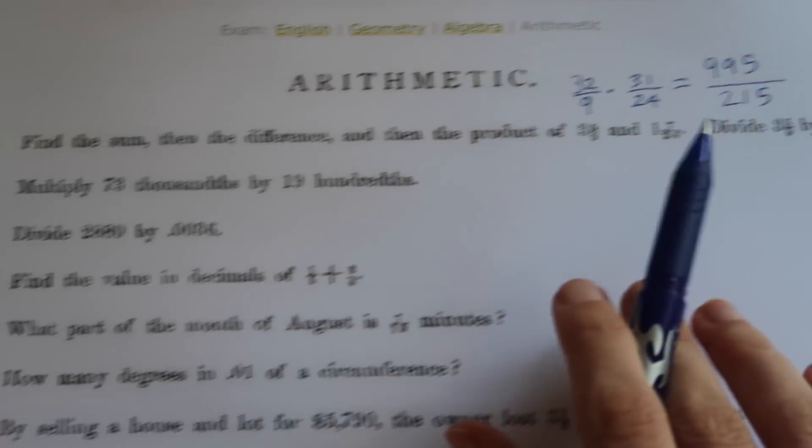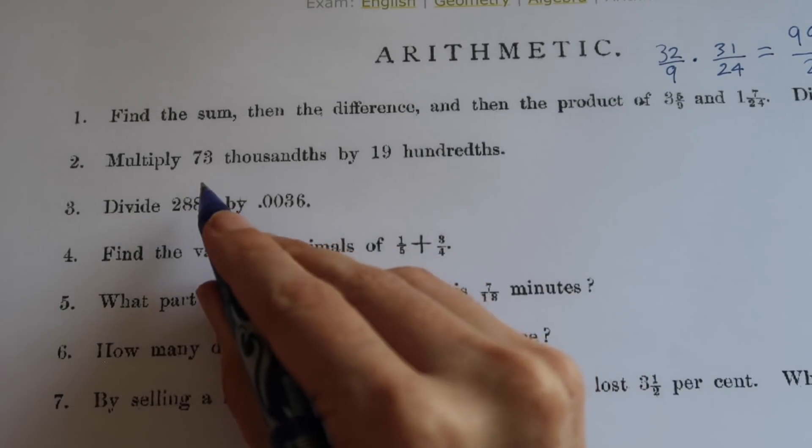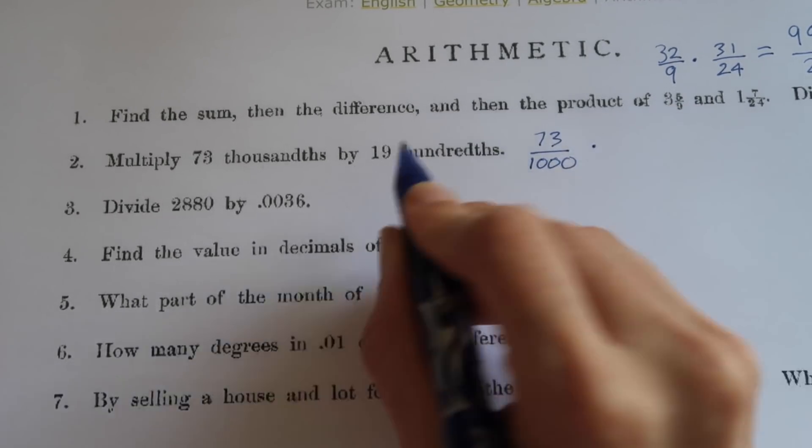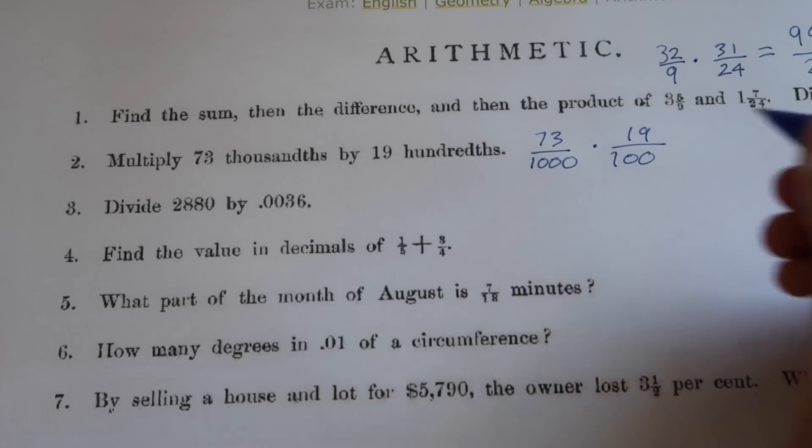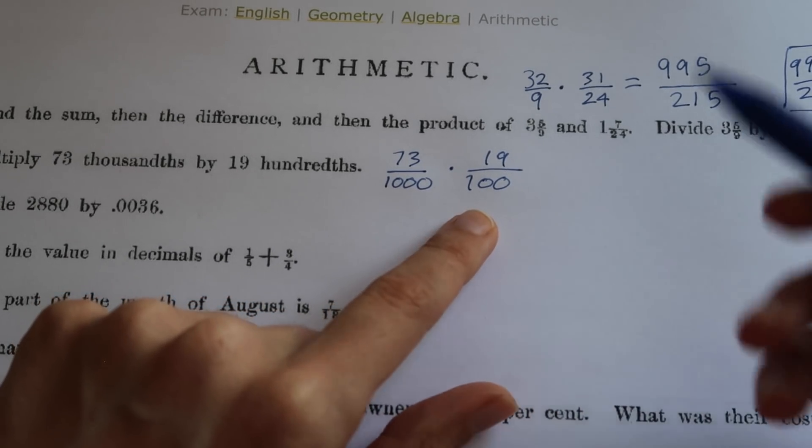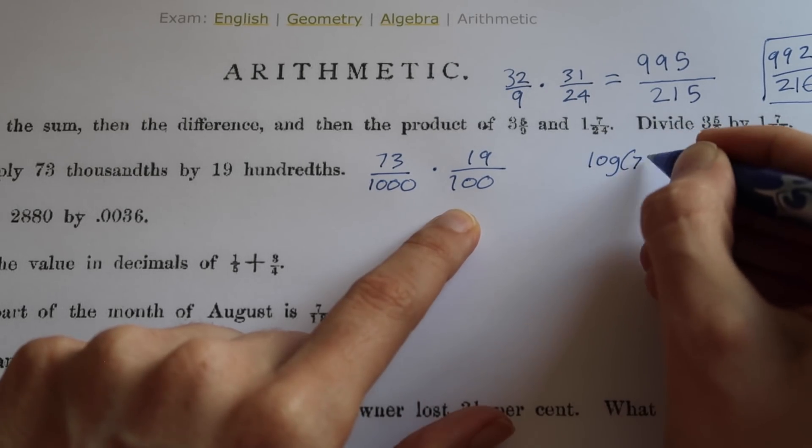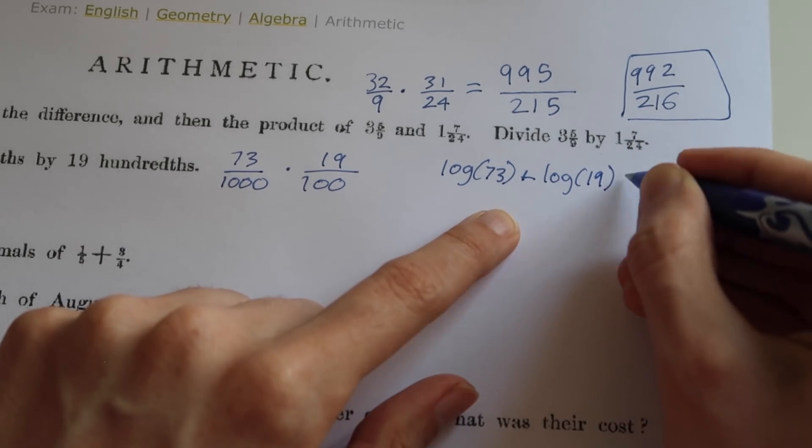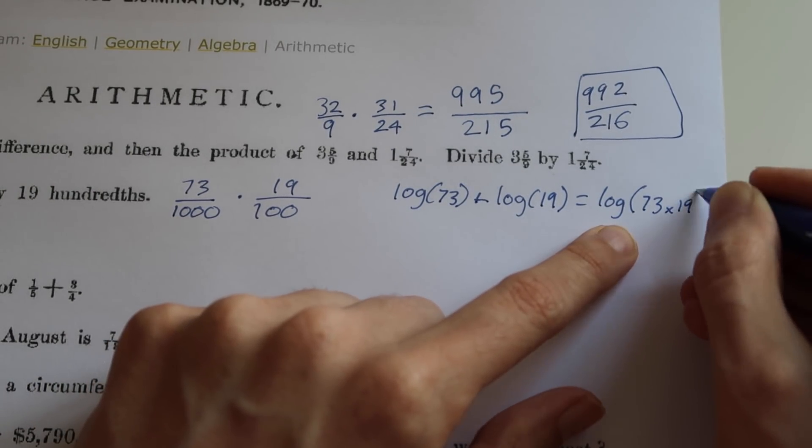Multiply 73 thousandths, which would be 73 over a thousand, by 19 hundredths, which would be 19 over 100. Okay, so if we want to do that, we should exploit the property of logs.